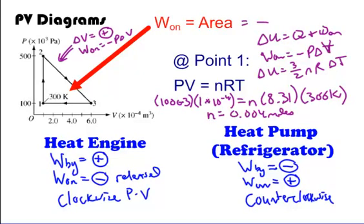A refrigerator or air conditioner works as a heat pump — pumping out heat to keep things cold inside. The work done by the gas is negative, or work done on the gas is positive, and it follows a counterclockwise PV diagram. It absorbs heat — like how a freezer absorbs heat from warm food to cool it down. I hope this helped — make sure you review those three PV diagram sections before class.